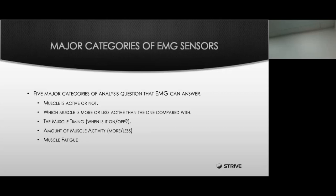The fourth category is the amount of muscle activity — how long the muscle is being activated and contracted, and at what point the muscle reaches a fatigue stage where it's no longer being fully activated. The fifth category is identifying muscle fatigue — when the muscle is no longer being contracted, at what point has it been pushed to its limit and essentially shut down because it has reached the fatigue stage.